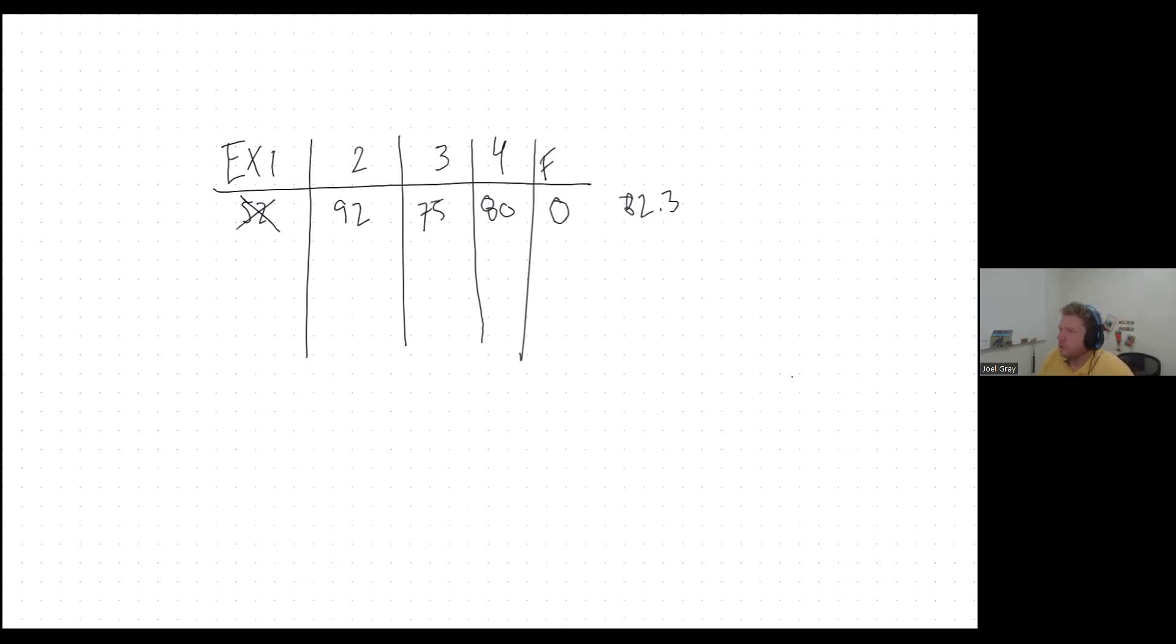Well, then the gradebook is going to look at your five grades and drop your lowest one. So the gradebook would drop this zero, but then it would bring back this 52.